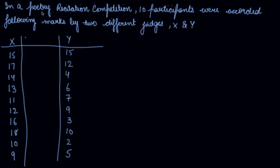Now, this is the question. In a poetry recitation competition, 10 participants were accorded the following marks by two different judges, X and Y. So calculate the coefficient of Rank Correlation between the marks given by the judges. Now, we are given the X judge marks which they gave to the 10 participants and the Y judge who gave the marks to the 10 participants.